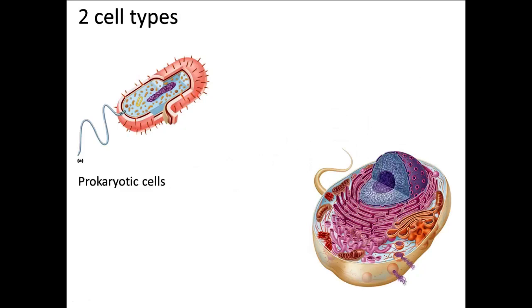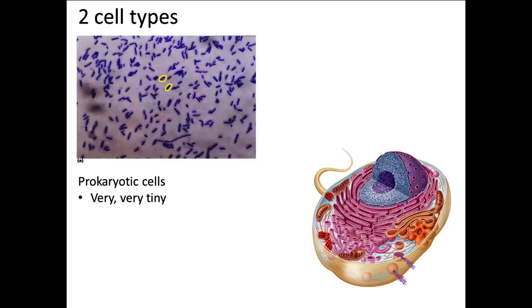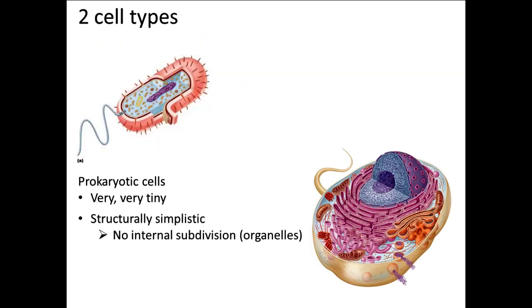There are two cell types. The first is prokaryotic cells — these are very, very tiny cells. Bacteria are prokaryotic cells, and they are structurally simplistic: they don't have any internal subdivisions called organelles. We see prokaryotic cells only in bacteria and archaea, which are both single-celled organisms. They can do amazingly complex biochemistry inside their simple cells, but when we look at them — especially with the microscopes we use in this class — you can't see any detail. A drawing shows a cell membrane, cell wall, and DNA inside, but under a microscope it would just look like a little tiny blob.